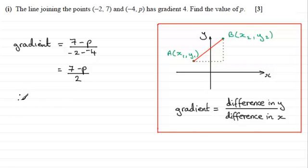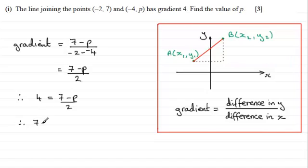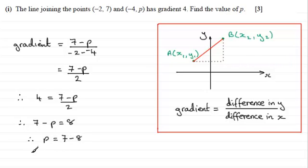We know that this gradient is four. So therefore four equals seven minus p divided by two, and we solve for p by multiplying by two to get seven minus p equals eight. Then adding p to both sides and subtracting eight from both sides gives p equals seven minus eight, and that gives us the result that p equals minus one.